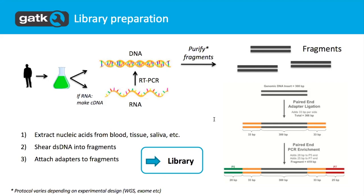Once you have that DNA, we will shear it — fragment it into a lot of different pieces that have a length between maybe 300 bases to a kilobase, with a distribution over that size. And here there are major choices to be made: whether you want to sequence your entire genome, or whether you want to sequence only part of it. So if you're not interested in sequencing the entire genome, you can focus only on exonic regions, for example.